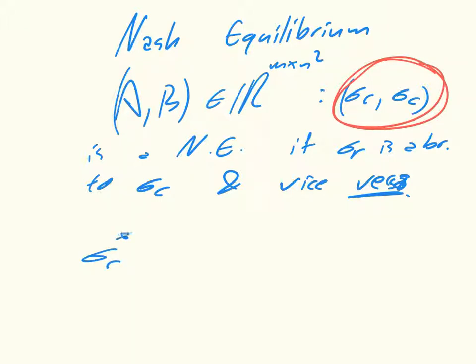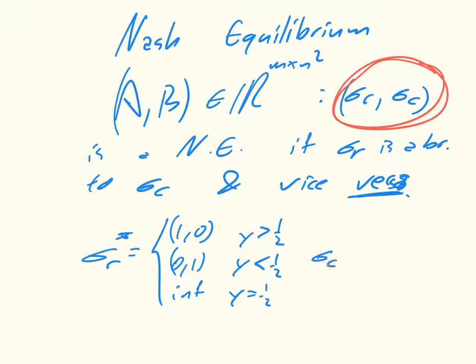where we had that sigma R star is equal to (1,0) for y greater than a half, (0,1) for y less than a half, and indifferent if y is equal to half. And it's easy to see that sigma C star is equal to (0,1) if x is greater than a half, and I'm using the notation from the previous videos and from the previous notes. If x is less than a half, then it's (1,0), and we have this indifference if x is equal to a half.